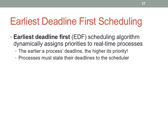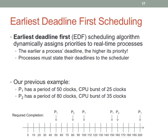The scheduling algorithm discussed in CS24 is called Earliest Deadline First (EDF). It looks at whose deadline is closest and assigns that process the highest priority. Now we have dynamically assigned priorities rather than statically assigned priorities — and that changes everything. The earlier the deadline, the higher the priority. Processes need to state their deadlines, and we also need to know their CPU burst length.